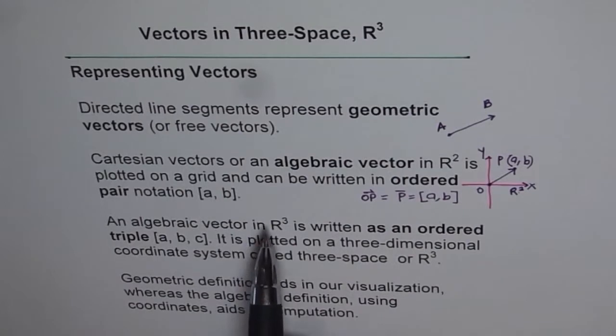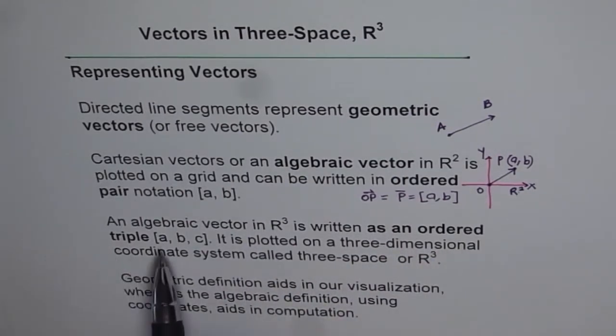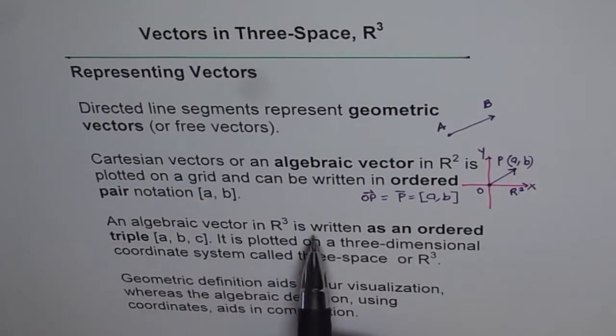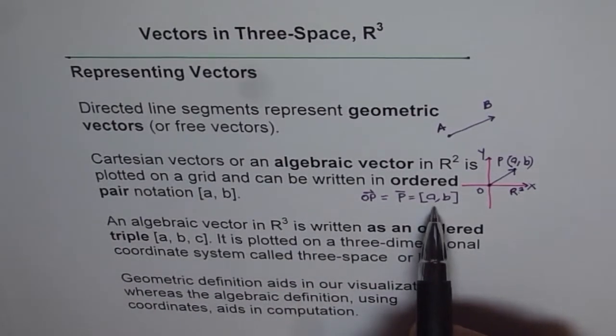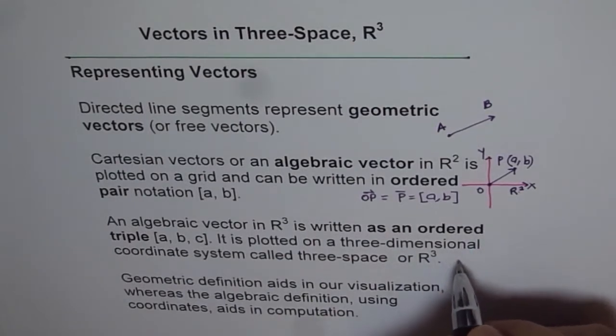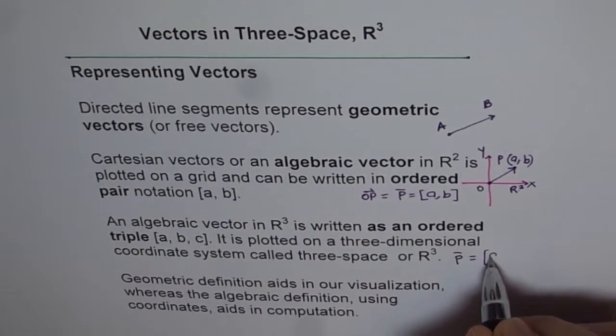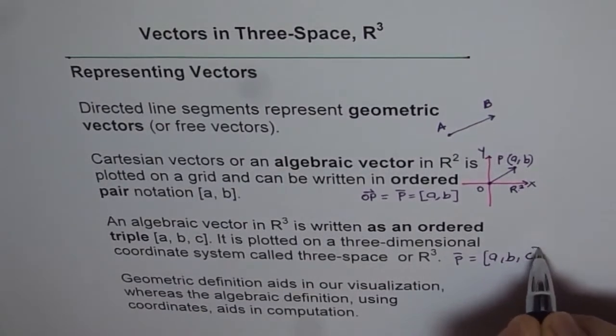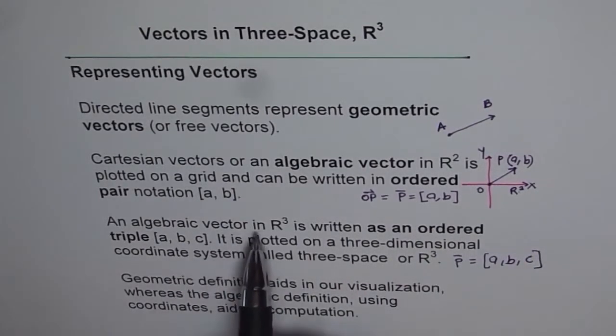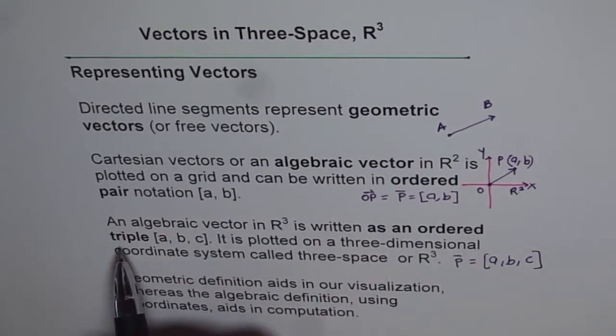An algebraic vector in R³ is written as an ordered triple [a, b, c]. In R³, we just extend this concept. Now, our vector P will be written as equal to [a, b, c], and this is called an ordered triple.